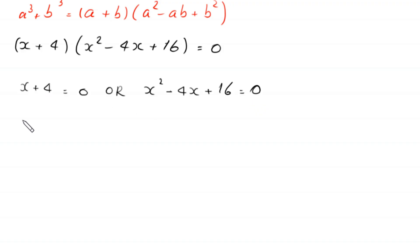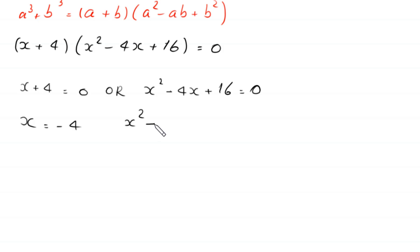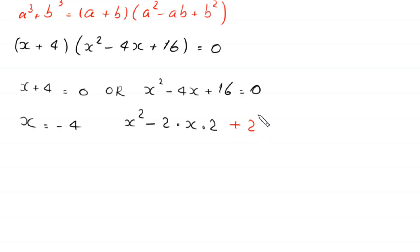From the first equation, we get x equals negative 4. From the quadratic equation x² − 4x + 16 = 0, we rewrite 4x as 2 times x times 2. To complete the square in this expression, we add 2 squared.